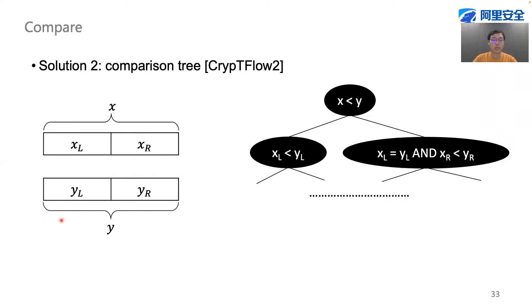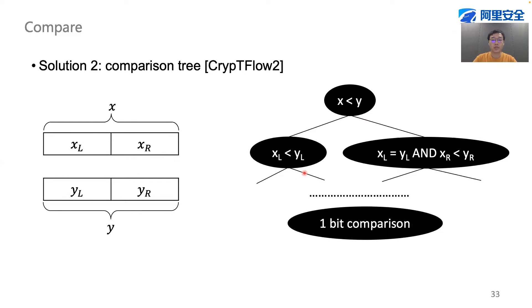But in CryptoFlow2, the authors propose a more efficient way. The idea is to use a comparison tree. If we compare two numbers x and y located in different parties, we can recursively break each value into two halves, compare each half, and then aggregate the result. Finally, this would lead to one big comparison in the leaves of the tree.